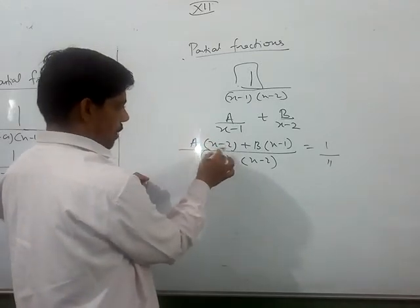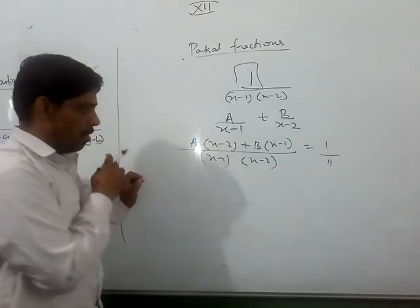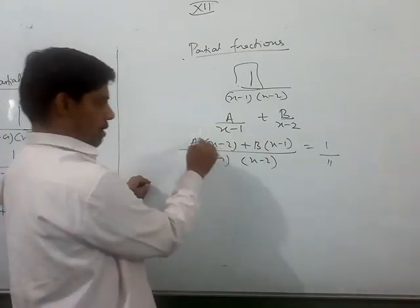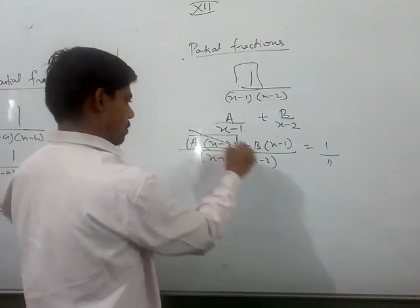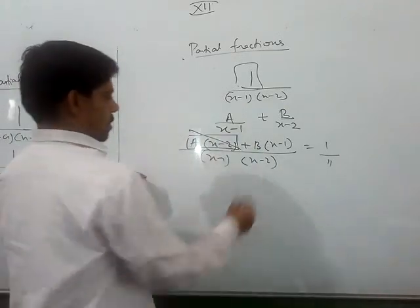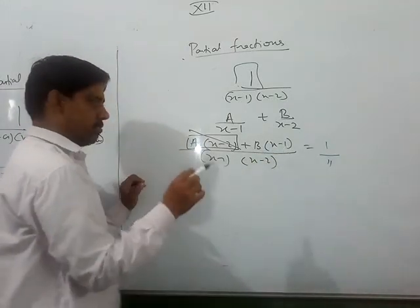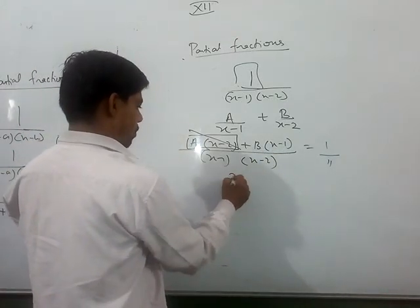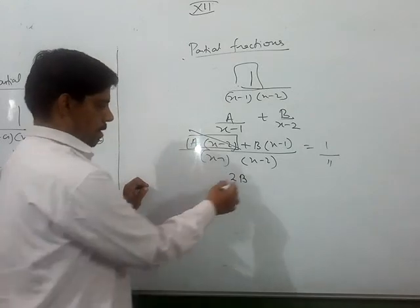Now, we are going to put x=2 here in the expression. So what will happen? As soon as you put 2 here, this expression will become 0. 2-2 is 0. This will become 2-1, that is 1. So we will get 1 times B. Upon...